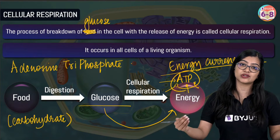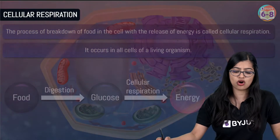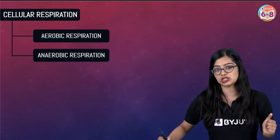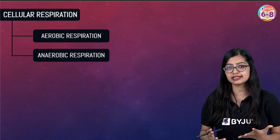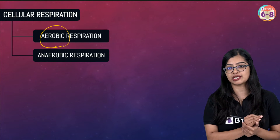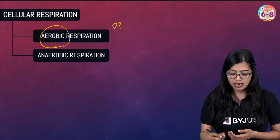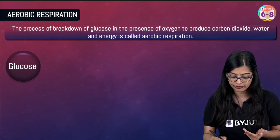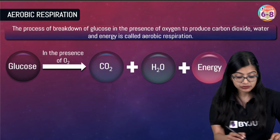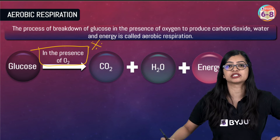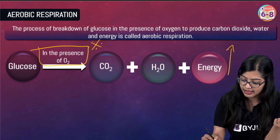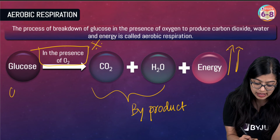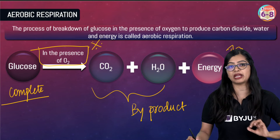There are two kinds of cellular respiration. One is aerobic respiration and the other is anaerobic respiration. Aerobic respiration is carried out by most cells inside our body. Aerobic respiration is the process wherein glucose is completely broken down to release energy in the form of ATP in the presence of oxygen. The by-products of this process are carbon dioxide and water.